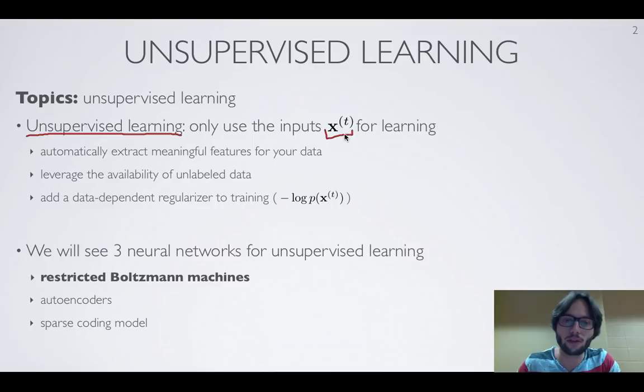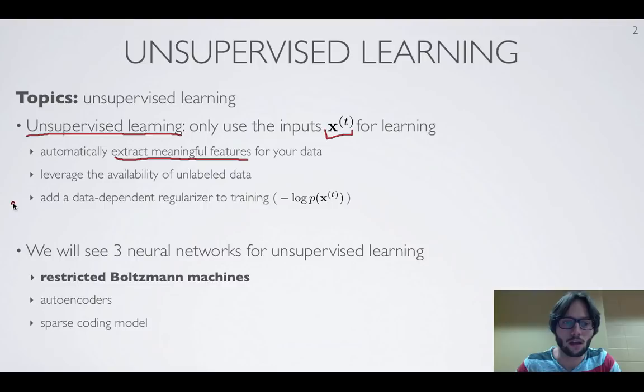The application of unsupervised learning in a neural network like a restricted Boltzmann machine is to extract meaningful features about your data that will hopefully make it more explicit — for instance, what class a particular input belongs to, or make it easier to predict other types of information about your data that you might be interested in.